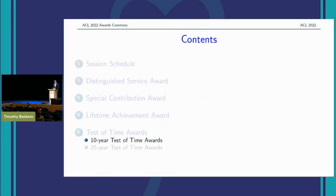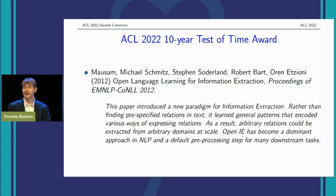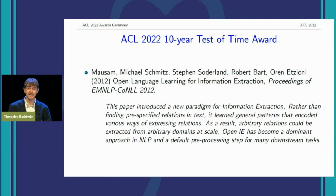The first of our 10-year Test of Time Awards goes to Michael Schmidt, Steven Sutherland, Robert Bart, and Oren Etzioni for 'Open Language Learning for Information Extraction.' This paper introduced a new paradigm for information extraction — rather than finding pre-specified relations in text, it learned general patterns encoding various ways of expressing relations. As a result, arbitrary relations could be extracted from arbitrary domains at scale. OpenIE has become a dominant approach in NLP and a default pre-processing step for many downstream tasks.